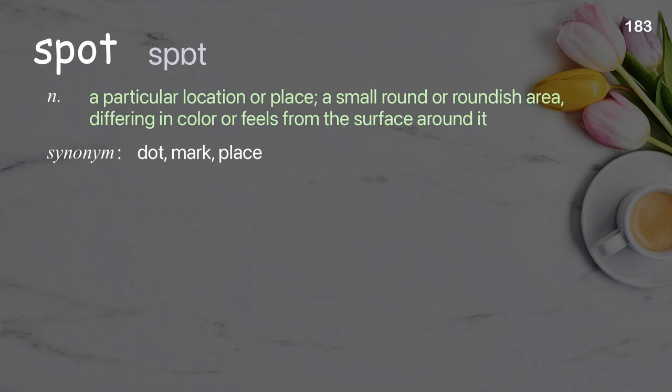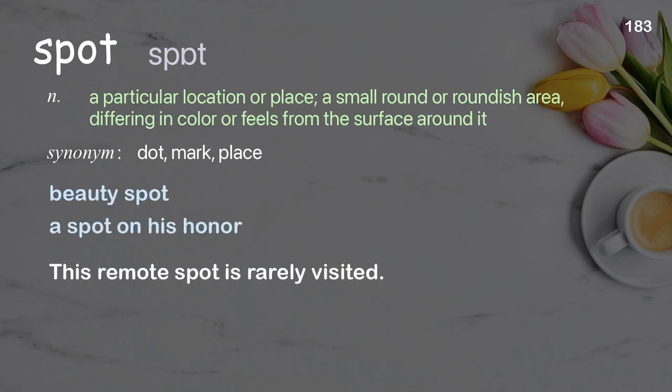Spot: a particular location or place; a small round or roundish area differing in color or feel from the surface around it. Examples: beauty spot; a spot on his honor; this remote spot is rarely visited.